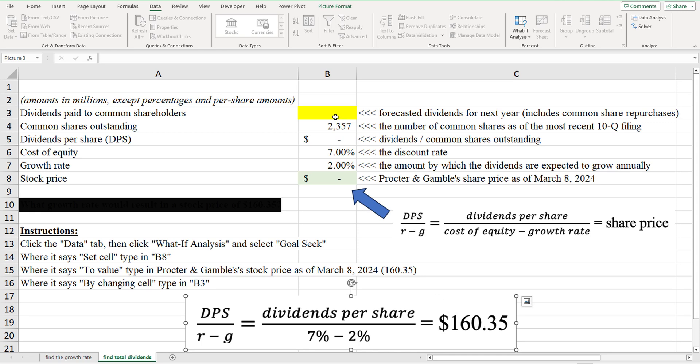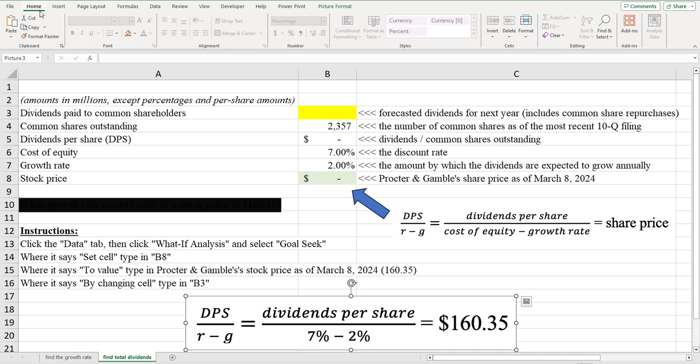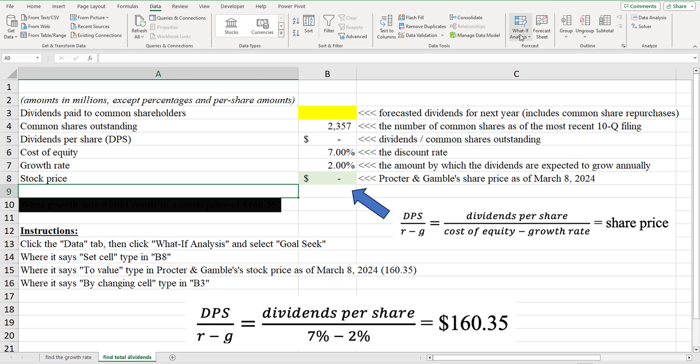So what I'm going to do is, again, I'm going to use Goal Seek. I'm going to use Goal Seek. So again, let's say we're at the Home tab, we would click on Data. So now I'm going to go up to What If Analysis, and I'm going to click Goal Seek. And where it says Set Cell,